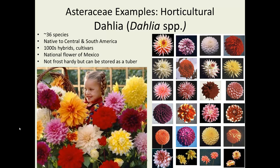Dahlias come in a dazzling array of types and colors. They are several different species native to Central and South America. One of the more famous varieties is called the dinner plate — the flower heads can be as big as a child's head. They also have dozens of other types: very tiny small ones, ones where the leaves are kind of curled up, and others that are spiky. There's enormous competition in the dahlia world to come up with the newest varieties and the biggest flowers. People will pick every bud off except one or two to grow the remaining flowers to enormous size for competition.